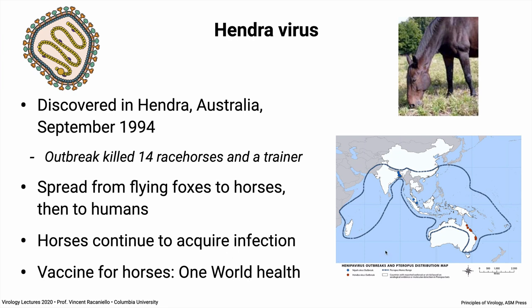This map shows Hendra outbreaks along the coast of Australia. The range of the flying foxes — bounded by the blue line — extends across many countries and areas, all of which are potentially at risk for Hendra infection. This same area harbors Nipah virus as well.